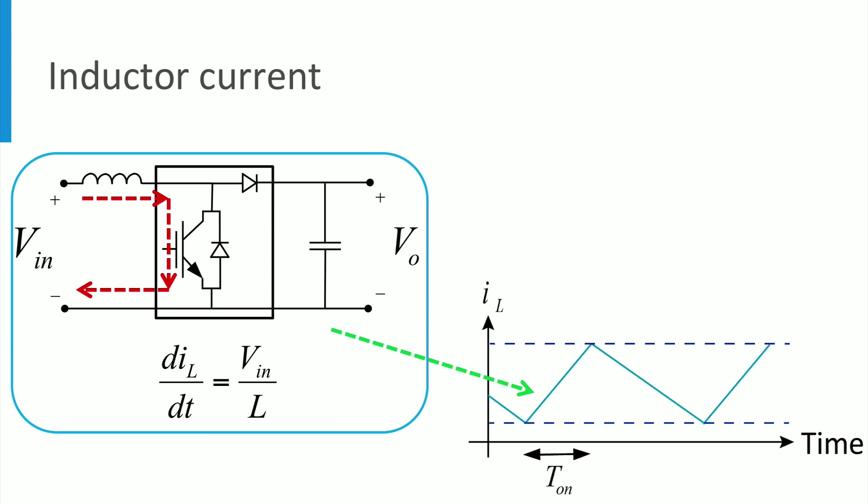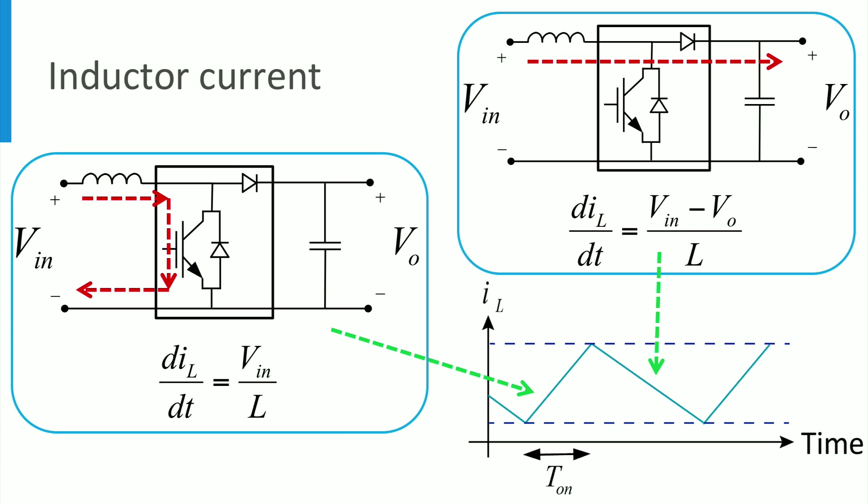During the on-time period, the inductor current derivative depends on the input voltage, while during the off-time period the derivative depends on the difference of the input voltage.